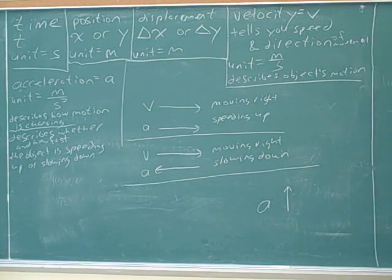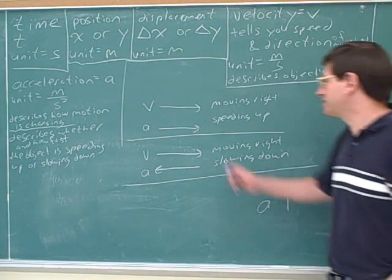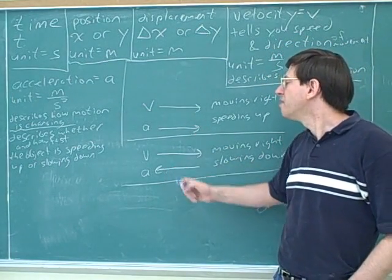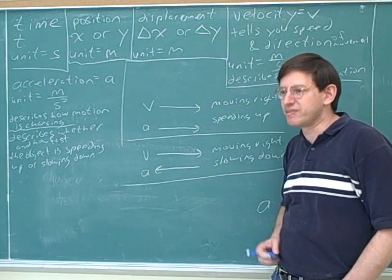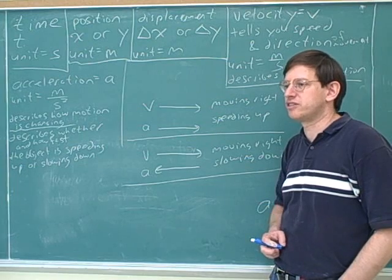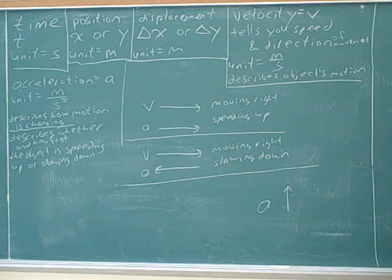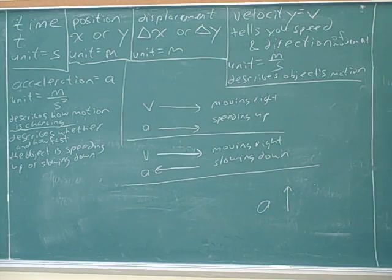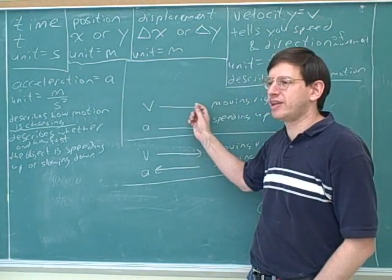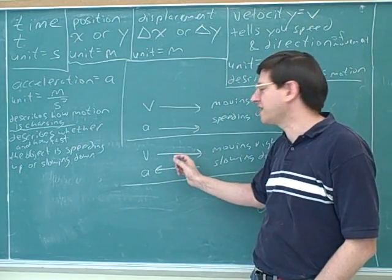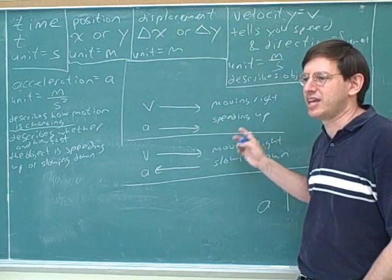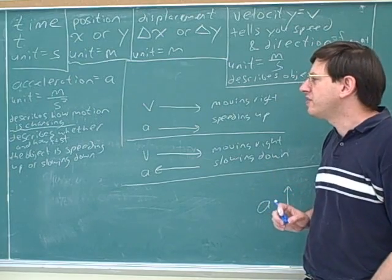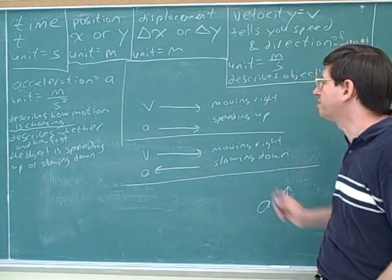Is acceleration a scalar? No — acceleration is a vector. You can see that because it has a direction; this acceleration is to the right and this one is to the left. But the direction of the acceleration is not the direction of movement of the object. It's not easy to describe in words what the direction of the acceleration tells you. All we need to say is: if the acceleration is parallel to the velocity, the object is speeding up; if anti-parallel, the object is slowing down. There's no simple way to interpret the direction of acceleration unless you compare it to the velocity.